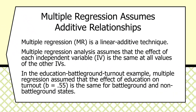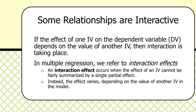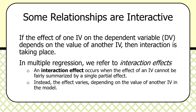For example, in the education battleground turnout example we've been tracing through this chapter, multiple regression assumed that the effect of education on turnout — which we found to be 0.55 in the multiple regression — is the same for battleground and non-battleground states. That's fine if you have an additive set of relationships, or if you're trying to ferret out spurious relationships. But if the effect of one independent variable on the dependent variable depends on the value of another independent variable, then you have interaction going on, and you have to figure out how to model and accommodate that effect in the regression model.